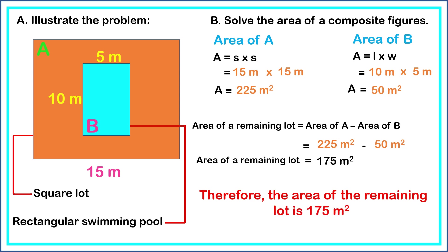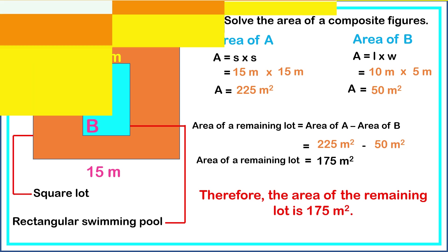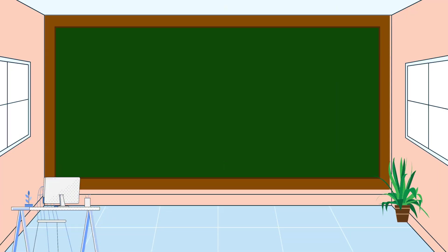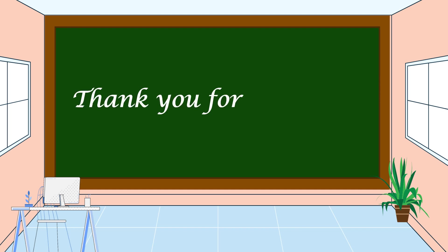Therefore, the area of the remaining lot is equal to 175 square meters. This is the way to solve this problem. I hope that you understand our lesson for today. Thank you for watching.